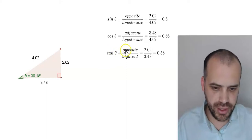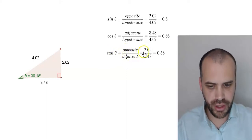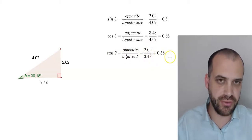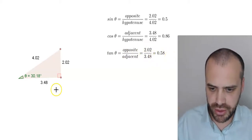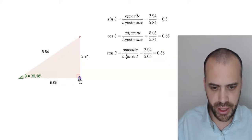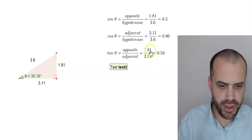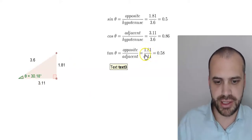Finally we have our last ratio: tan theta equals opposite over adjacent. Opposite is 2.02, adjacent is 3.48, and there is our value 0.58. And you can see that it doesn't matter how large I make my triangle, as long as the angle stays the same, the ratio stays the same as well.